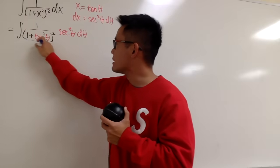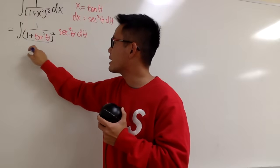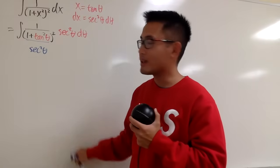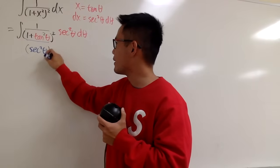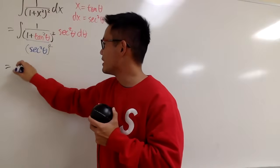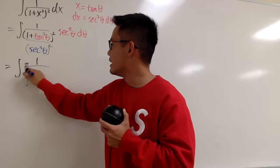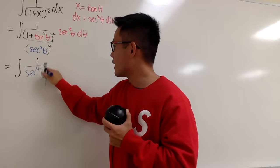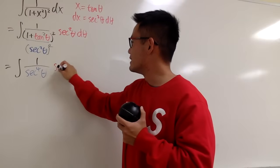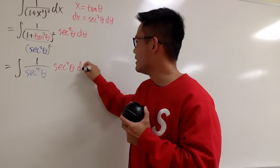Let's take a look at what this is on the denominator. Notice that 1 plus tangent squared theta is exactly secant squared theta, and don't forget, we still have another square right here. In another word, this is just integral 1 over secant to the fourth power theta and we have secant squared theta d theta.